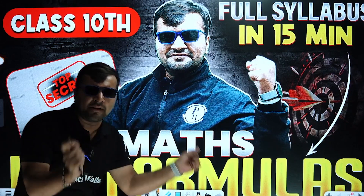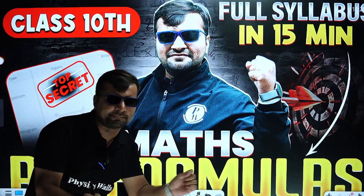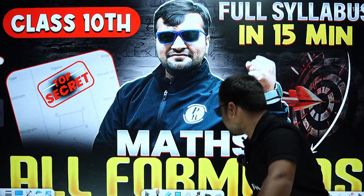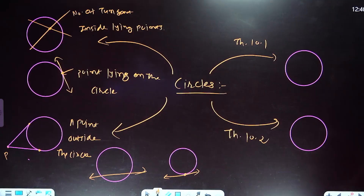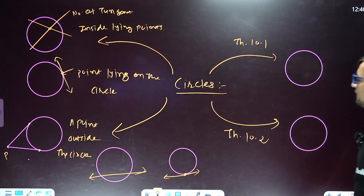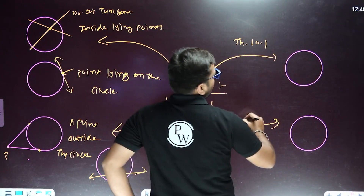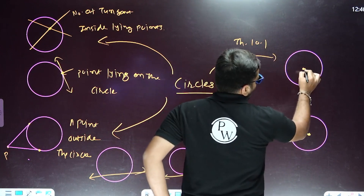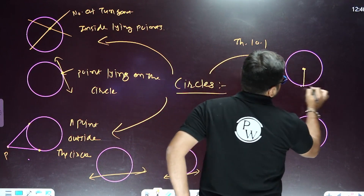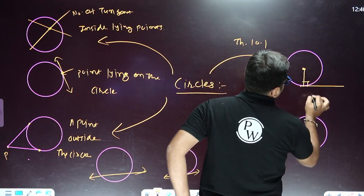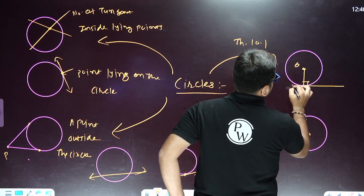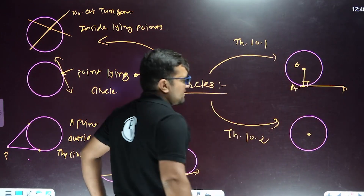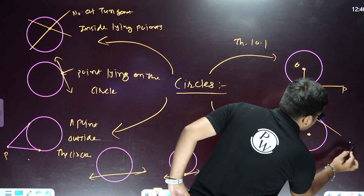Hello dear students, today we will discuss all maths 14 chapters formulas in 15 minutes. Let's start with the circle chapter. In Theorem 10.1, the radius is perpendicular to the tangent.